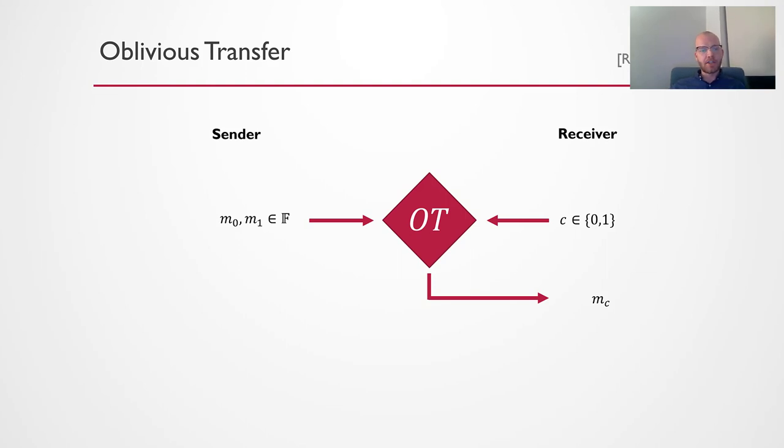As a way of introduction, I'd like to introduce Oblivious Transfer. Here there's two parties, a sender and a receiver. The sender has two messages, M0 and M1, and the receiver has a choice bit C. The receiver should learn the message MC and nothing about the other message. Oblivious Transfer is used throughout multi-party computation, and it's one of the most fundamental protocols in cryptography.